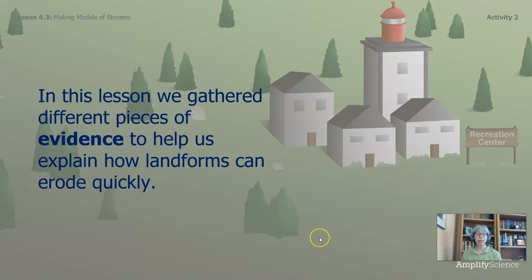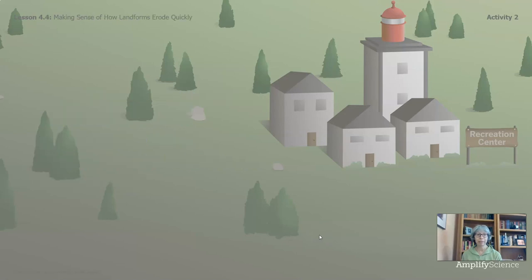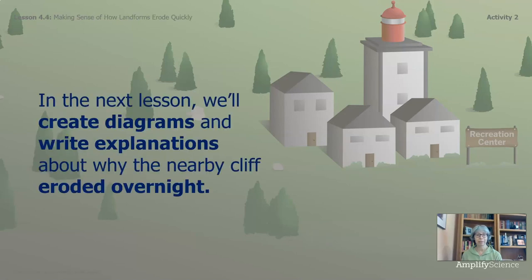In this lesson, we gathered different pieces of evidence to help us explain how landforms can erode quickly. In the next lesson, we'll create diagrams and write explanations about why the nearby cliff eroded overnight. So until then, take care. Bye for now.